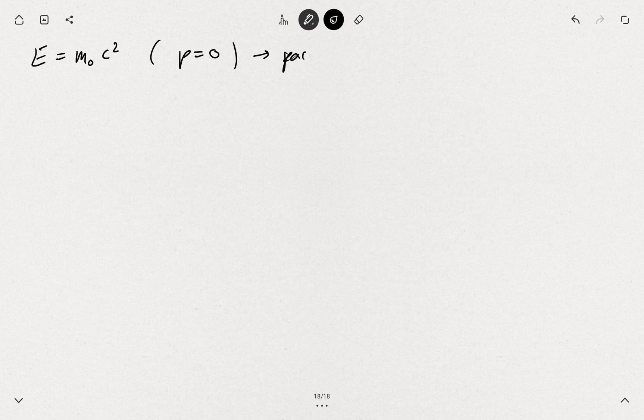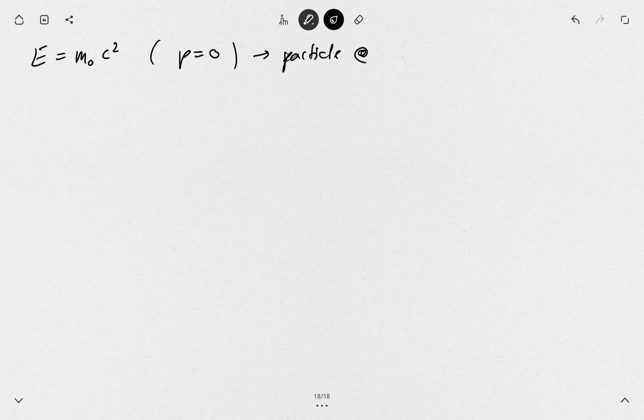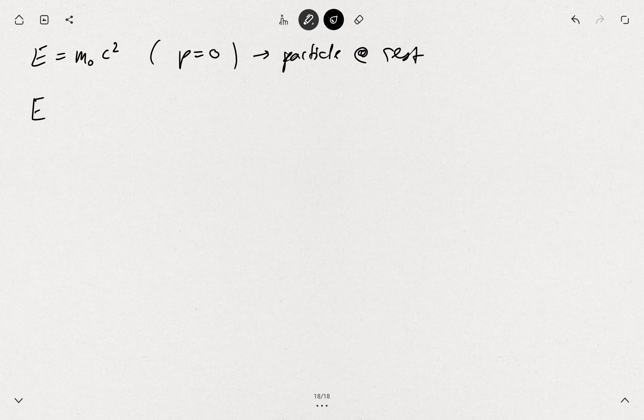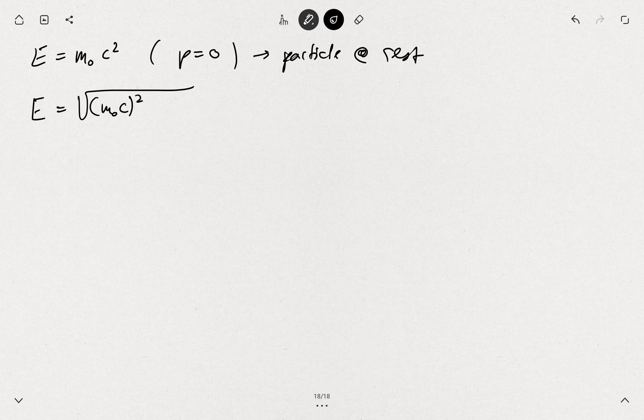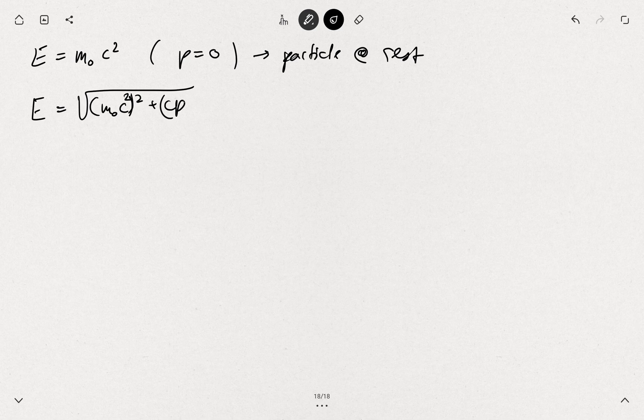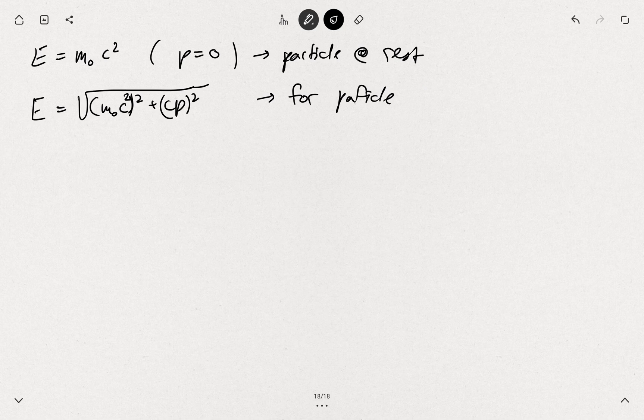The correct equation is then the square root of (m₀c²)² plus (cp)², and that's for the particle in motion.